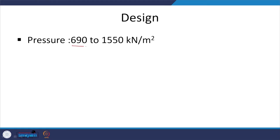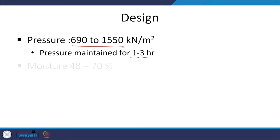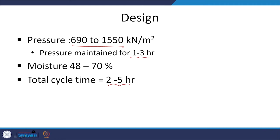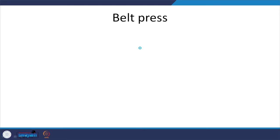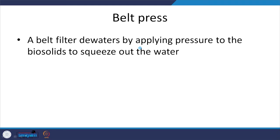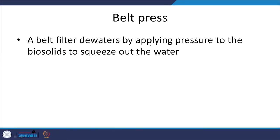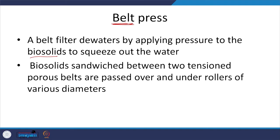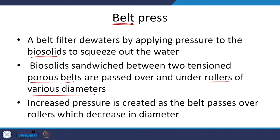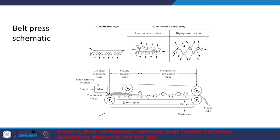For design, pressure is the key aspect and must be maintained. Total cycle time is 2 to 5 hours depending on the extent of moisture removal required. Belt press is similar to what we saw in the IIT Roorkee sewage treatment plant video. The belt filter dewaters by applying pressure to biosolids to squeeze out water. Biosolids are sandwiched between porous belts and passed over rollers of decreasing diameter, which increases pressure as the belt moves along.